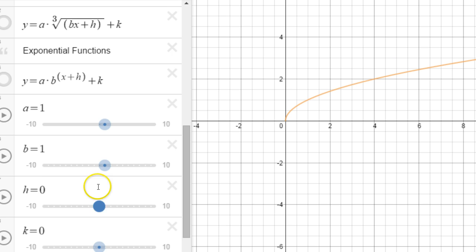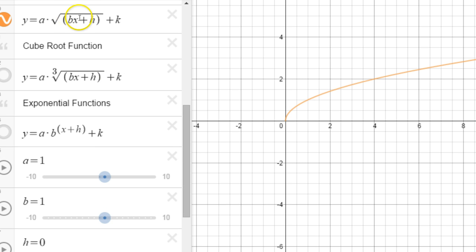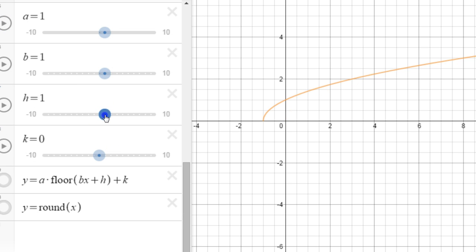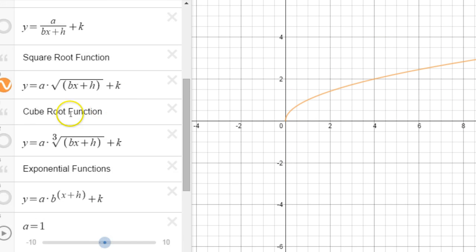If I mess around with h, and remember the b is in front of the x, the h is right after it. If I mess around with the h, if I make it positive it moves it back, if I make it negative it moves it forward. And k, once again, just simple vertical translation.